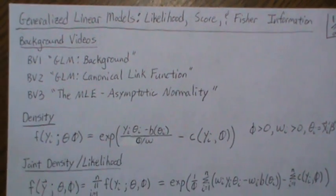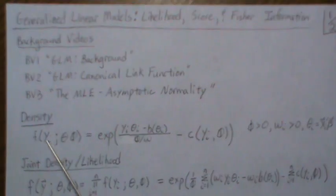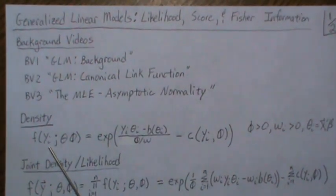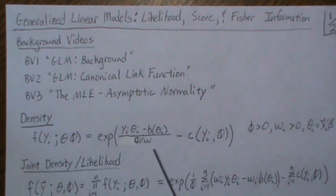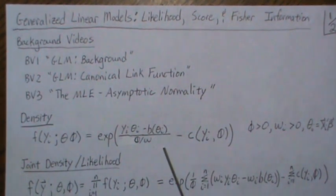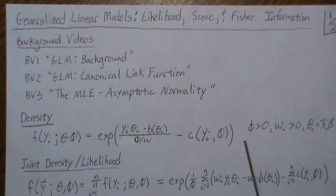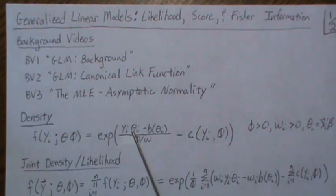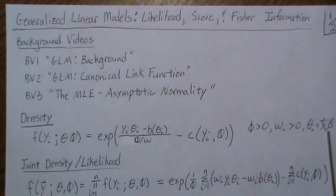In the previous videos we looked at the density of y, and it had to fit into this over-dispersed exponential family. The dispersion parameter is positive, the weight is positive, and we're going to model the canonical parameter as a linear combination of betas.